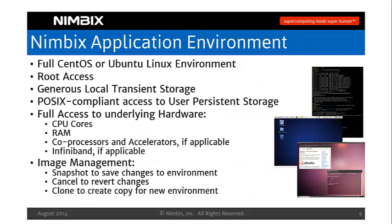What enables all of this is the NIMBICS application environment — a bare-metal machine that is provisioned and orchestrated when you choose to do a build or computation. You get a full CentOS or Ubuntu Linux environment with root access, and it only takes seconds to spin up — that's part of our patented technology. You get about 750 gigabytes of local transient Scratch Space, so you don't have to worry about using slow network-attached storage for temp files.